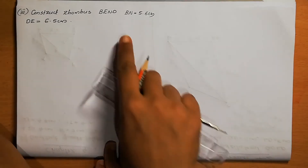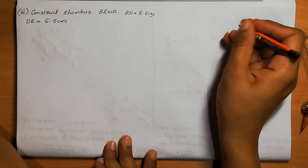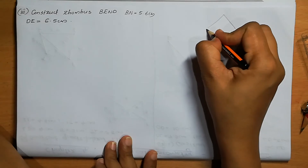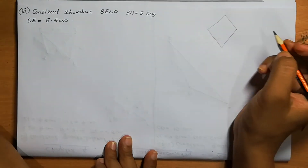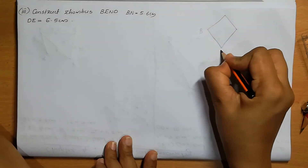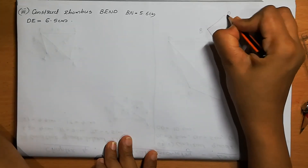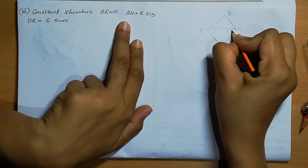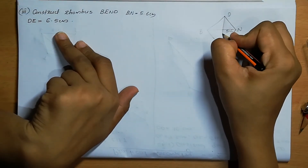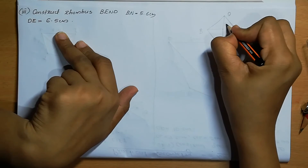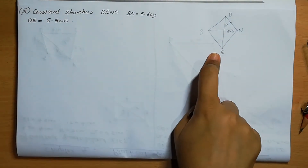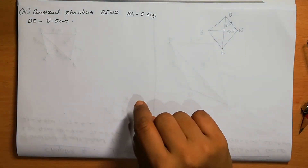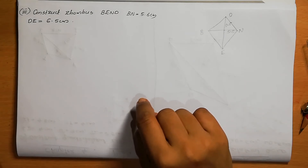Construct rhombus BEND. BN = 5.6 and DE = 6.5. We can first draw a rhombus — rhombus means all 4 sides are equal. We can mark BEND. BN is a diagonal of 5.6 and DE is another diagonal of 6.5. The sides are not given, so using these diagonals we are going to construct the rhombus. Once you get the figure, you need to measure the sides — if all 4 sides are equal, your construction is perfectly correct.